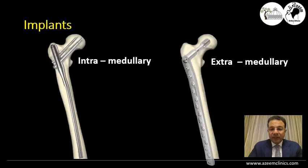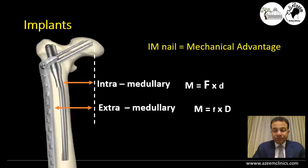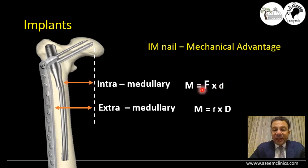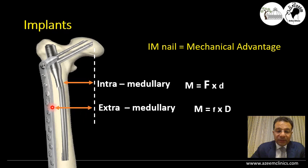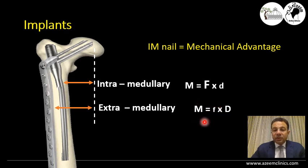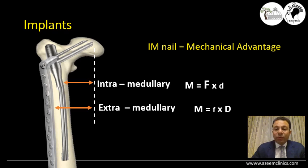To achieve the best results in subtrochanteric fractures, we are always concerned with which implant is best — either intramedullary or extramedullary fixation. Theoretically, the intramedullary device has a shorter lever arm, so it requires a larger force to produce the same bending moment, giving it a mechanical advantage over extramedullary devices. Because the lever arm of the extramedullary fixation is longer, a lower force will lead to the same moment.